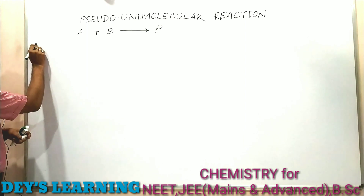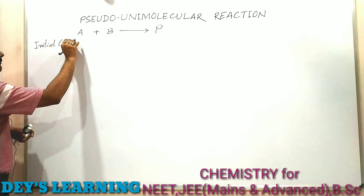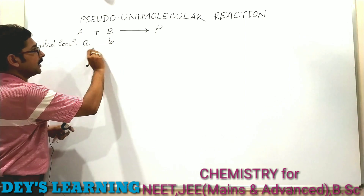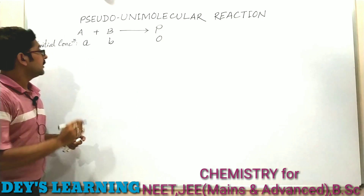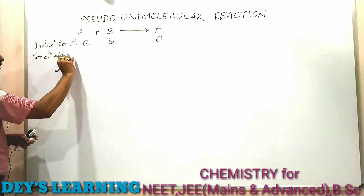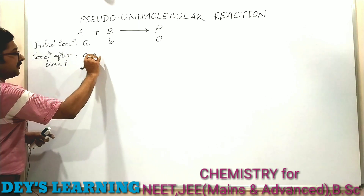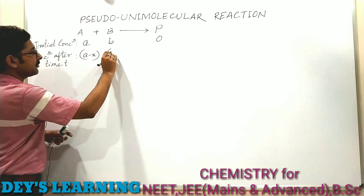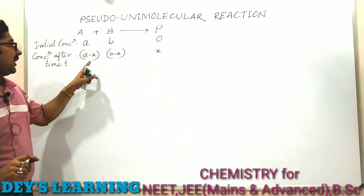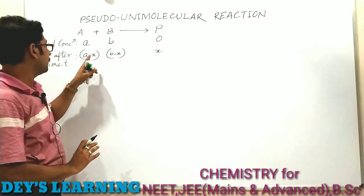The initial concentration of A is small a, initial concentration of B is small b, and the initial concentration of the product is 0. The concentration after time t becomes A minus x for reactant A, B minus x for reactant B, and x for the product. The assumption is that A and B react to the same extent, so both decrease by x.